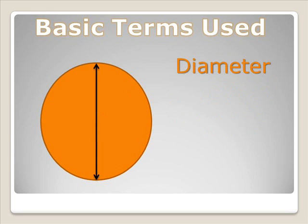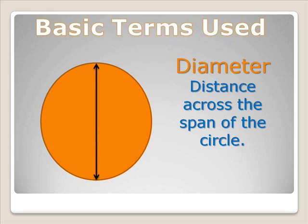The next one we're going to be looking at is the diameter. The diameter describes the distance across the span of the circle. What you'll probably realize is this is twice the distance of the radius.